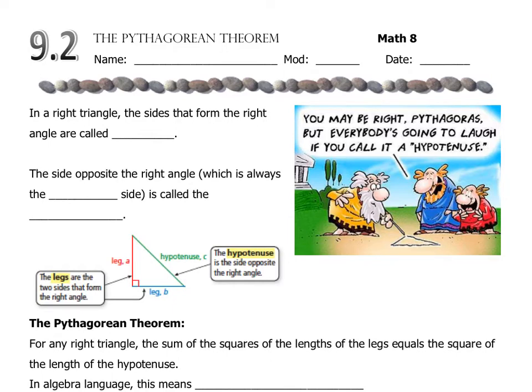One of the things that the Pythagorean Theorem deals with is right triangles, and I know you learned about right triangles a long time ago. Let's just refresh your memories. In a right triangle, the sides that form the right angle are called legs, and the side opposite the right angle, which is always the longest side, is called the hypotenuse.